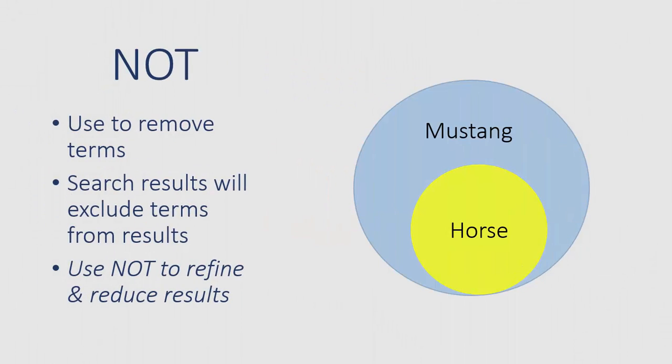Last but not least, NOT. This operator isn't used as much as AND and OR, but NOT can be helpful when you need to eliminate a word or a phrase from your search results. Look at the example Mustang and HORSE. You want to find resources relating to Mustang, but NOT HORSE. By using NOT, we remove results referencing HORSE. NOT is another way to reduce and refine your search results, especially when using keywords with multiple connotations.